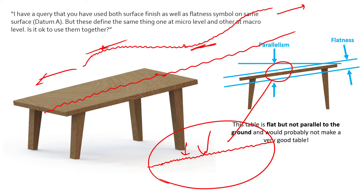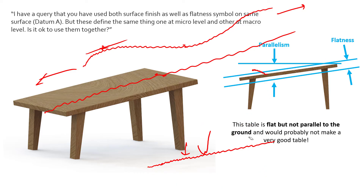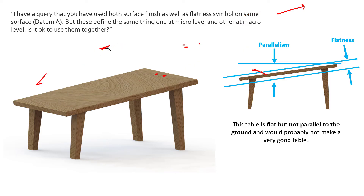Obviously if you have massive waves on a surface, it's going to fail flatness regardless of what the surface finish is doing. So that's a brief overview of flatness and surface finishes. This is a very common question — they are two different things, and yes, you can put both on the same surface. It happens all the time in industry. One controls the macro level of waviness or form error; the other controls the micro level — how smooth, polished, or gritty that surface is going to be.